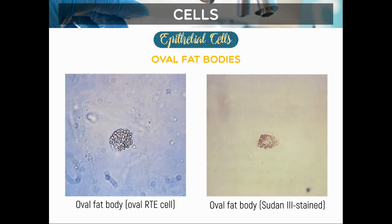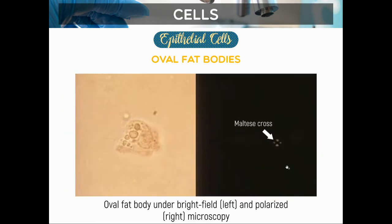Here we can see oval fat bodies stained with orange-red droplets, confirming neutral fat or triglyceride. Under bright field microscope we see the oval fat body, and under polarized microscope the Maltese cross pattern confirms the presence of cholesterol. Next, we have bacteria — they are small spherical (cocci) or rod-shaped (bacilli) structures. Their identification error is amorphous phosphates and amorphous urates, which can clump together in large numbers. The clinical significance is UTI. The major bacteria responsible for UTI is E. coli, which is bacilli in morphology.